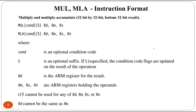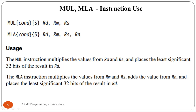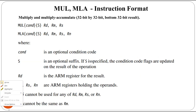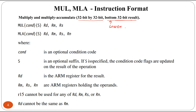Before studying any instruction you should understand the instruction format - it is very important. For multiply and multiply and accumulate instructions, 32-bit by 32-bit multiplication is done and the bottom 32-bit result is stored. The format for the MUL instruction is: MUL, then a condition code, then optionally S to update the flag bits stored in the CPSR register.